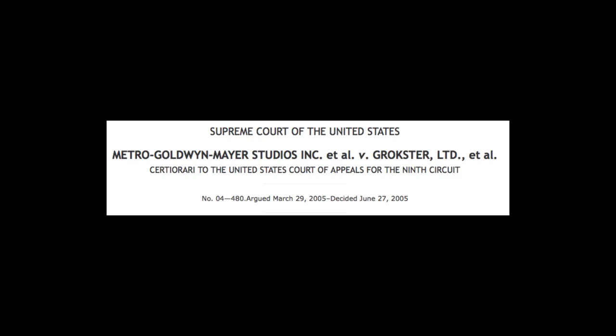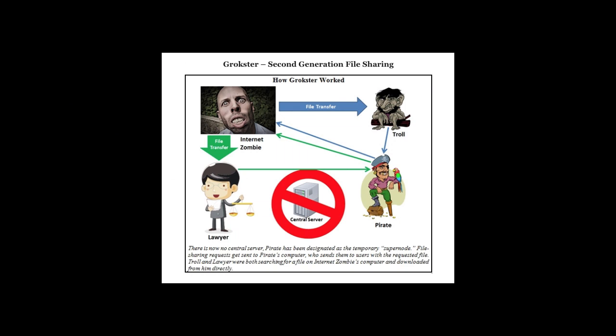In Metro Goldwyn Mayer Studios Inc. v. Grokster Ltd., the courts further narrowed the application of the Sony rule. The Appeal Court held that the Sony rule would preclude Grokster from liability, as the software had substantial non-infringing uses and that, due to the lack of a centralised server, Grokster the developer did not have any knowledge or constructive knowledge of the consumers' infringing use.